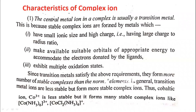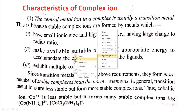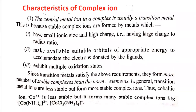Characteristics of complex ions. The central metal ion in a complex is usually a transition metal. In a complex ion, the central metal is linked to a number of ligands. Most transition metal atoms or ions form coordination compounds or complex ions.